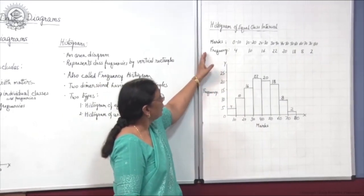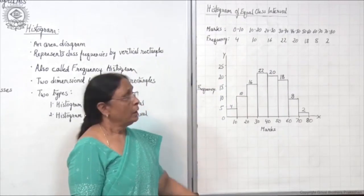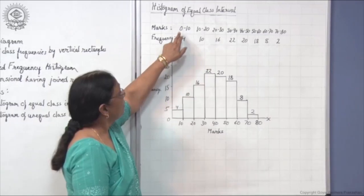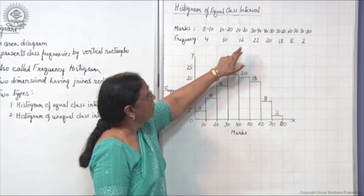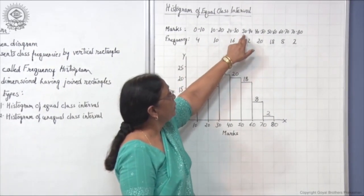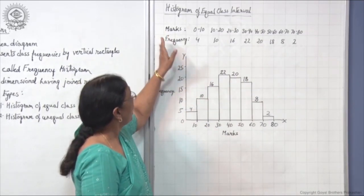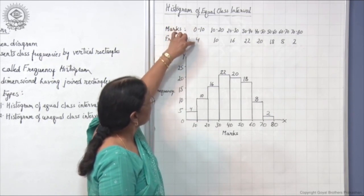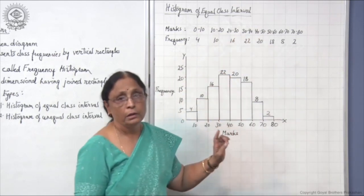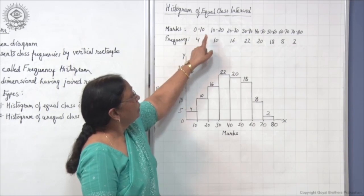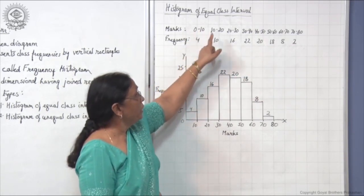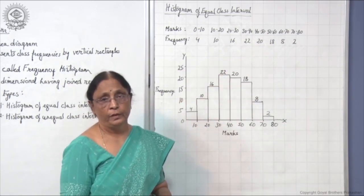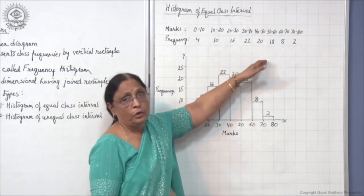Now let us move to the first one — histogram of equal class interval. Here we have taken marks and frequency. Suppose in a class, 4 children are getting marks between 0 to 10, 10 children between 10 to 20, 16 between 20 to 30, 22 between 30 to 40, and so on. The class interval is the same — 0 to 10, 10 to 20, 20 to 30 — the class interval is 10 in each case and the frequency is different. So this is the case of equal class interval.